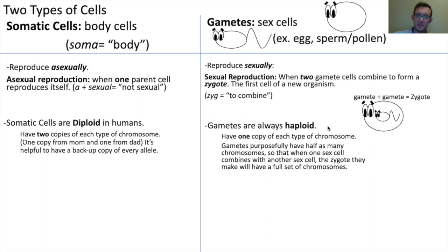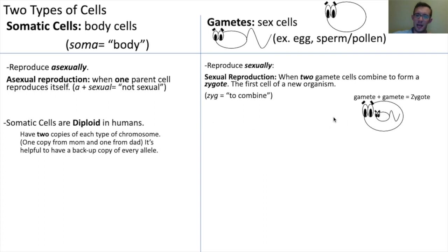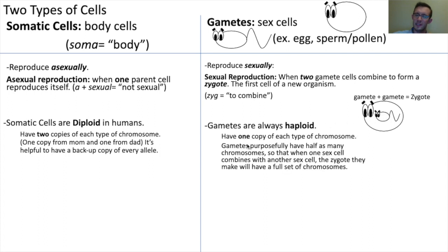Whereas the gametes themselves are considered haploid — that is, each gamete, each sex cell, only has a single copy of each chromosome. So that way, when they combine with another sex cell, the zygote that they create has a full set of chromosomes.